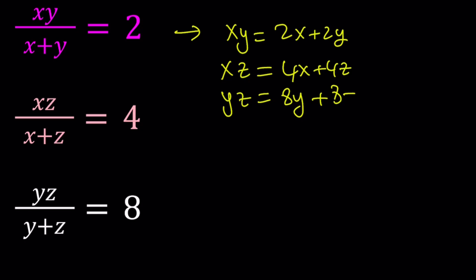Suppose you add these three equations up, what would you get? You would be getting xy plus xz plus yz equals 2x plus 4x, that's going to be 6x, and now we have 2y plus 8y, which is 10y, and finally plus 12z. Now, this doesn't really seem to help much, but let me tell you something.